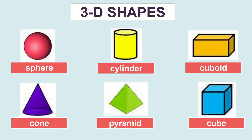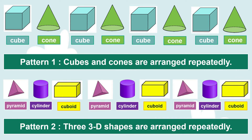Let's recall all the 3D shapes that we have learned before: sphere, cylinder, cuboid, cone, pyramid, and cube. We can arrange 3D shapes to make beautiful patterns by arranging them repeatedly. Let's look at some examples.